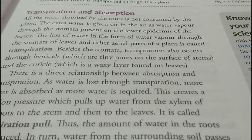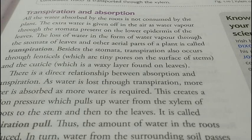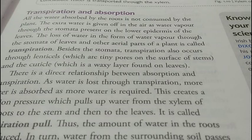Water root से ऊपर जाने की यह process ascent of sap कहलाती है। Absorption और transpiration में एक relation maintain होता है — सुबह और शाम absorption ज़्यादा और transpiration कम होता है जिससे leaves turgid और fresh नज़र आती हैं। दोपहर में transpiration rate बढ़ जाता है और absorption कम हो जाता है, जिससे पत्ते मुरझाए और पेड़ सूखा नज़र आता है।